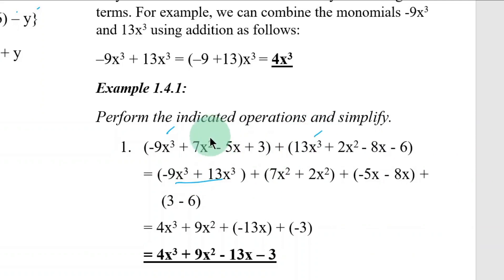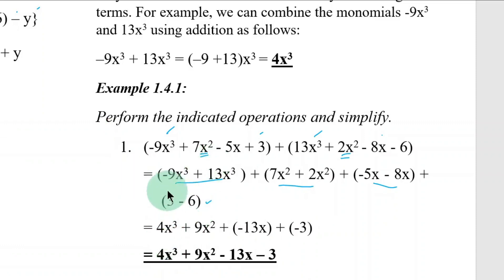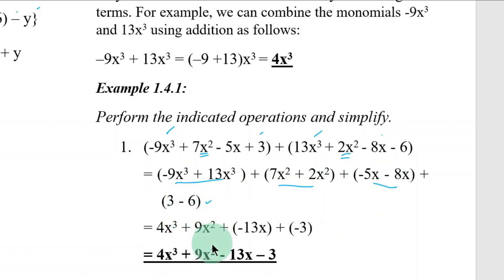Then 7x squared goes with 2x squared. Next is negative 5x — those go together. And the last terms, 3 and negative 6, those are combined. Simplifying: we have 4x cubed plus 9x squared, then negative 13 gives negative 3. The final answer is very basic — similar to the previous topic.